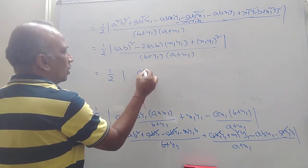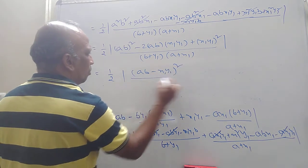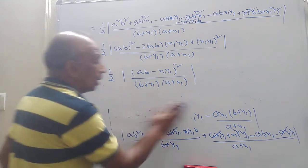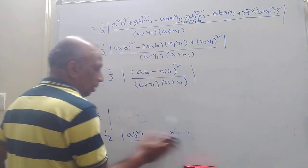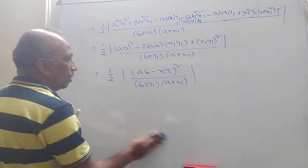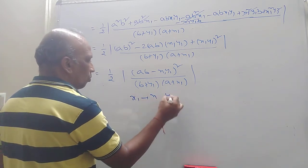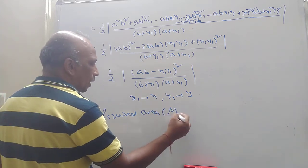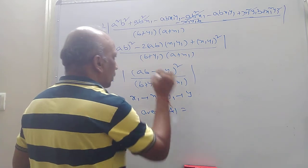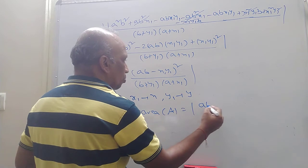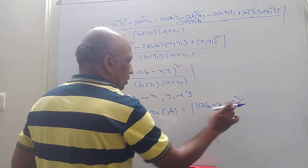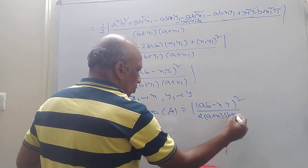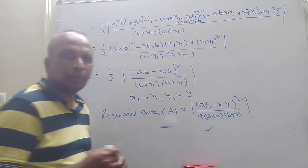The final answer: area A equals one-half times mod of (AB minus X1·Y1)² divided by [(B plus Y1)(A plus X1)]. In the beginning I had taken X as X1 and Y as Y1, so I should replace now. Replacing X1 with X and Y1 with Y, the required area A equals mod of (AB minus XY)² divided by [2(A plus X)(B plus Y)]. This is the required area. Thank you.